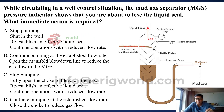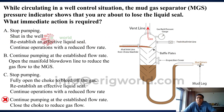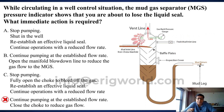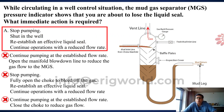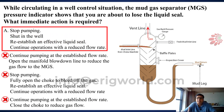Let us check all the options. Option D says continue pumping — that is straight away wrong. Option C says stop pumping — that is right — then open choke. Why open choke? If you open choke, the back pressure will decrease and allow more influx into the wellbore, so that is wrong. Continue pumping again is wrong. So the right answer is A: stop pump, shut in the well, re-establish liquid seal by flushing it with new mud or kill mud, and continue operation with a reduced pump rate.